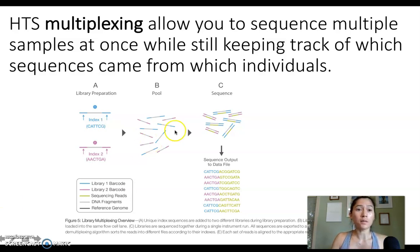What multiplexing is in high-throughput sequencing is a process that allows you to sequence multiple samples at once while still keeping track of which sequences came from which individuals. That's really important.